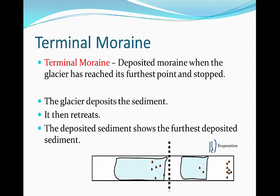The deposited sediment marks the furthest point in the river valley. On the left-hand side of the diagram, separated by the dotted line, we have the glacier reaching its furthest point, where it loses its energy and can't move forward anymore, so it dumps all of its material. Then in the second part, the glacier is retreating by the process of ablation, and we can see the line of terminal moraine which it has left behind.